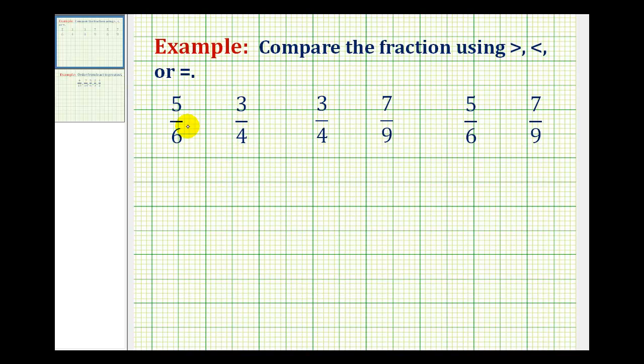So for example, if we want to compare 5/6 and 3/4, the least common denominator would be 12. But we could also just multiply the denominators together. 6 times 4 would be 24, and use a common denominator of 24.